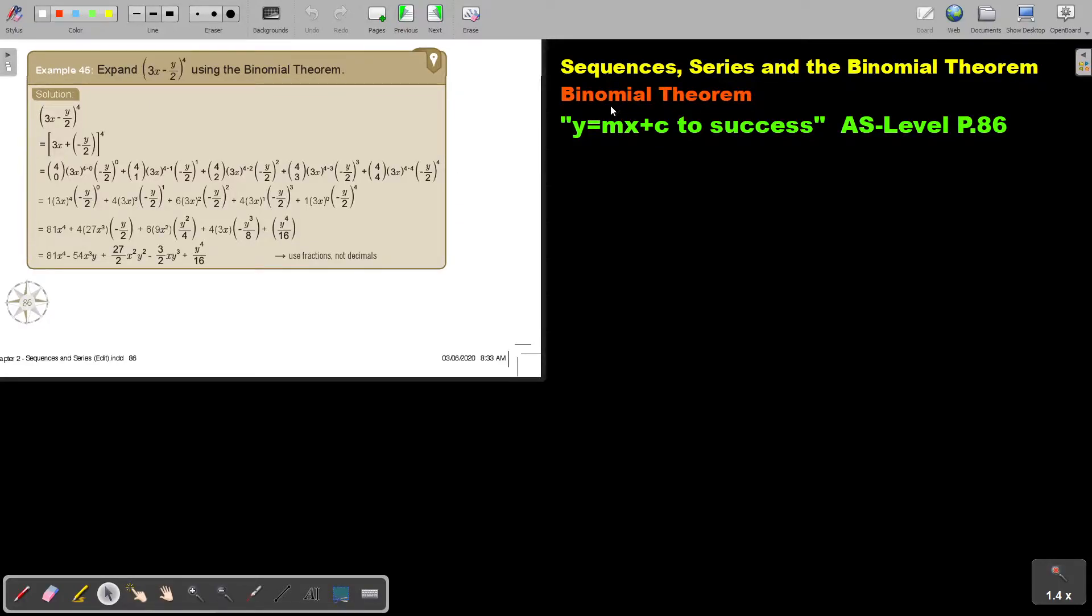In this video, we will continue with the binomial theorem. You will find this on page 86 in the Namibia AS level mathematics textbook Y equals MX plus C to success. Expand, now luckily this is only to the power of 4, 3x minus y over 2, using the binomial theorem.